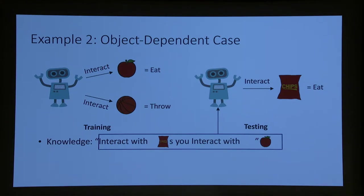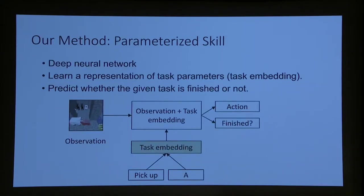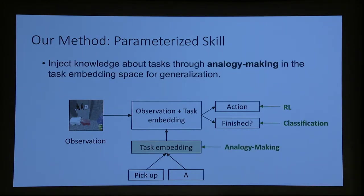What we do is insert knowledge via analogy — for example, the way you interact with chips is the way you interact with an apple, because they're both food-category objects, so you eat them. We learn a task embedding and use analogy making to train it so this kind of generalization happens. We use reinforcement learning to learn the action sequence, and classification for the agent to learn when it thinks the task is finished.